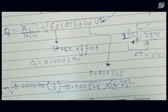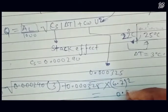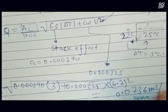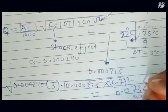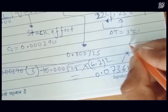So we will get 0.0736 meter cube per second, and if we convert it into meter cube per hour, we have 265 meter cube per hour.